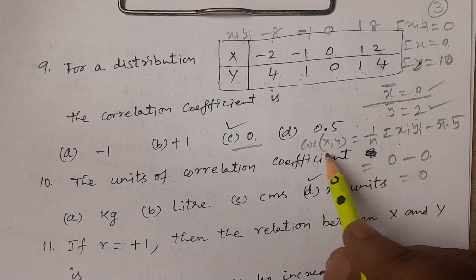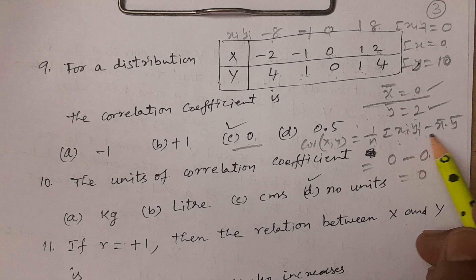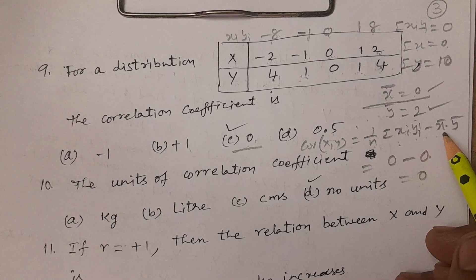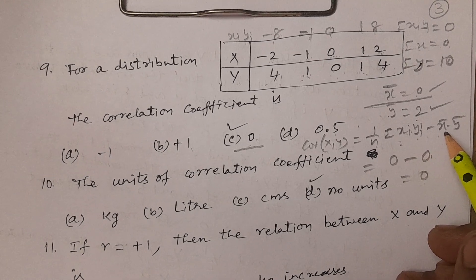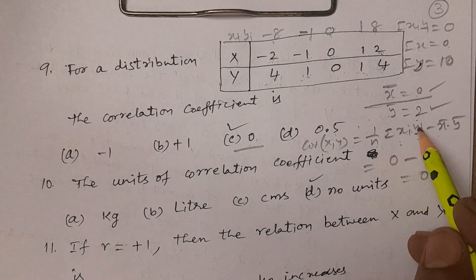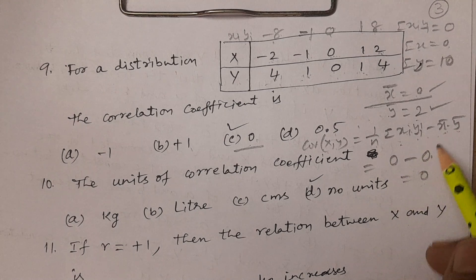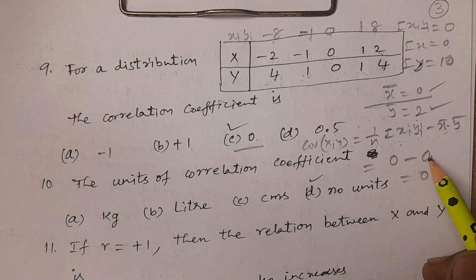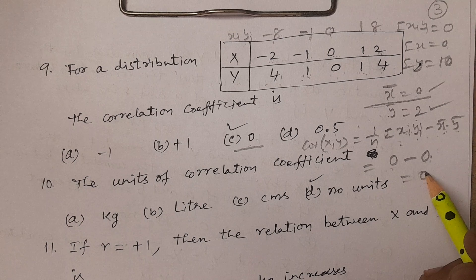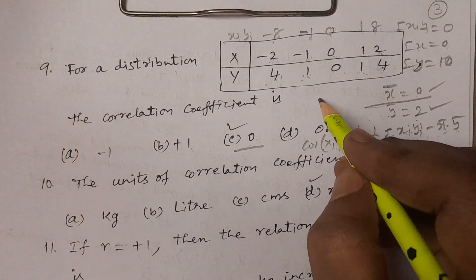Covariance of x y equals one by n times summation xi yi minus x bar times y bar. Summation xi yi is zero, x bar is zero, so covariance of x y equals zero minus zero equals zero. Therefore r equals zero.